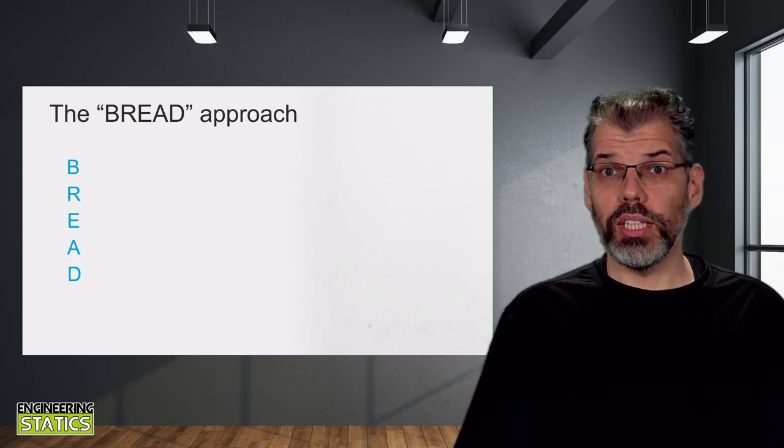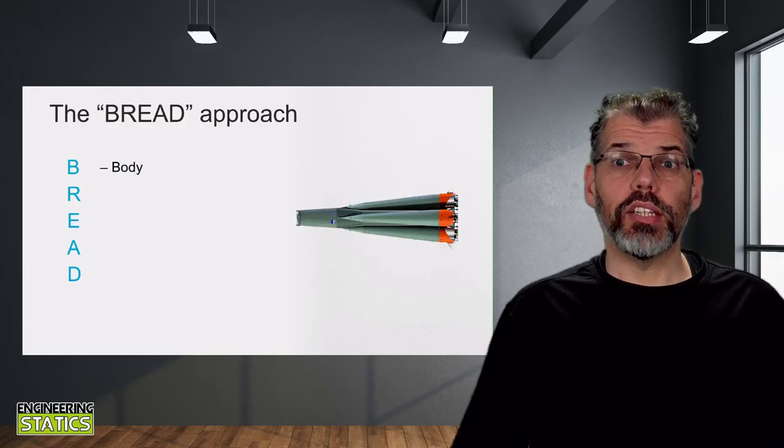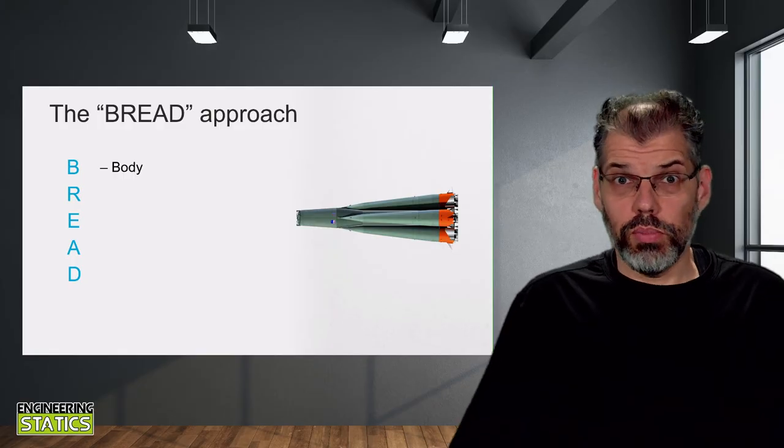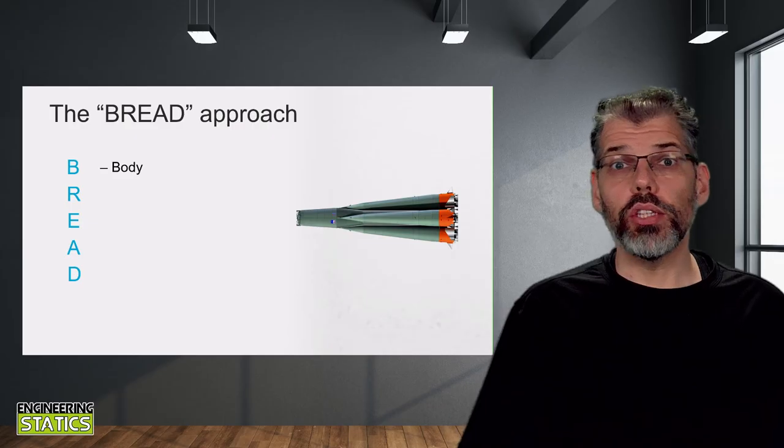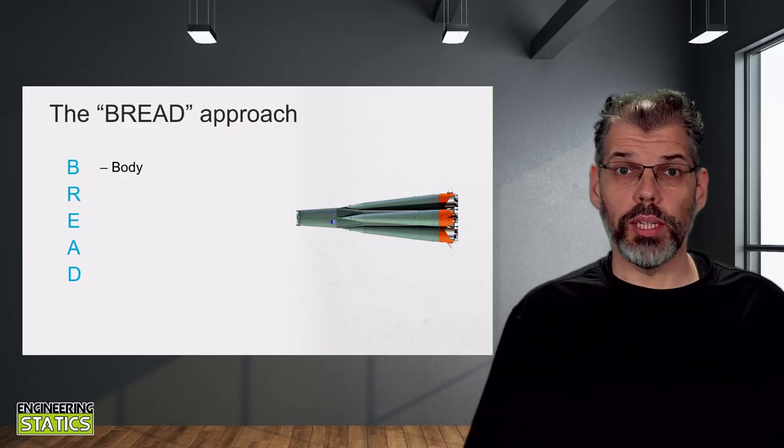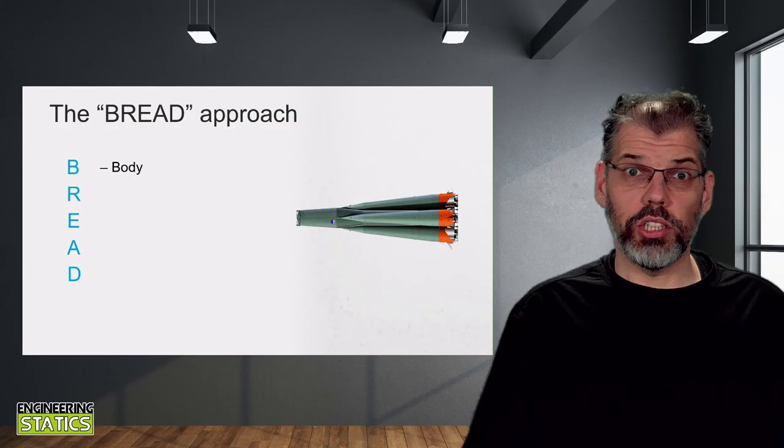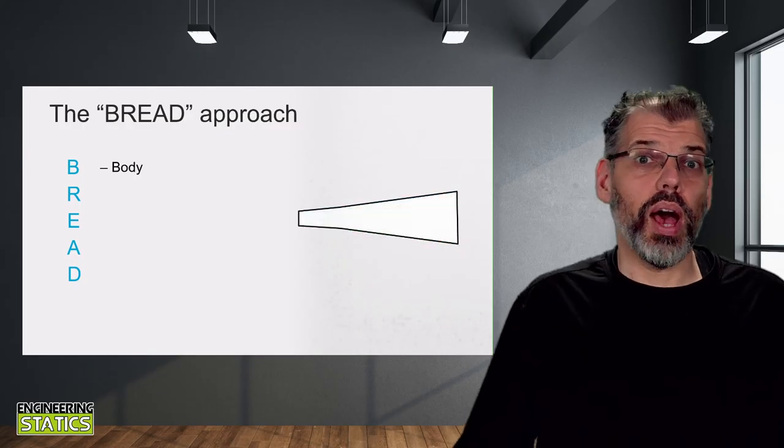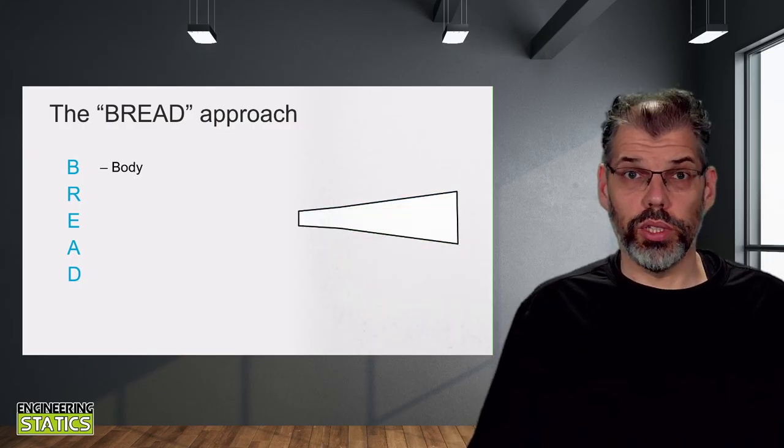Let's break down what each of the letters stands for. B stands for body, and it is to remind you that you need to draw the body you are removing from its environment. Now, you don't have to draw the body in as much detail as shown here. A simple outline of that body will suffice.